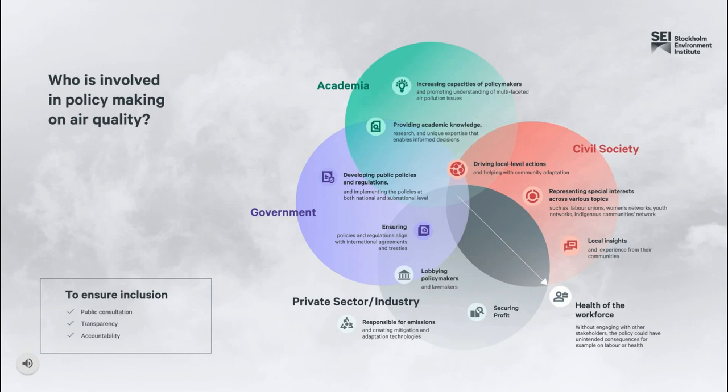If policy-making is driven by a single arm of government and stakeholders, such as industry or environment, and is reactive rather than proactive, there is a chance that it could have unintended consequences, for example on labor or health. It could also result in action being very siloed, making cooperation between departments difficult and therefore hampering enforcement.